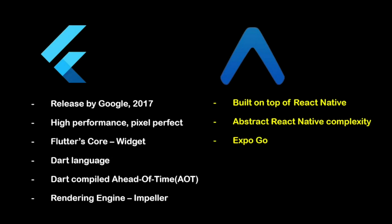Another key feature is the Expo SDK, which offers access to system features like the camera, notifications, and sensors, alongside standard UI components with regular updates and support. So Expo is best thought of as an enhancement to React Native — it makes it easier to use, more beginner-friendly, and overall more efficient.